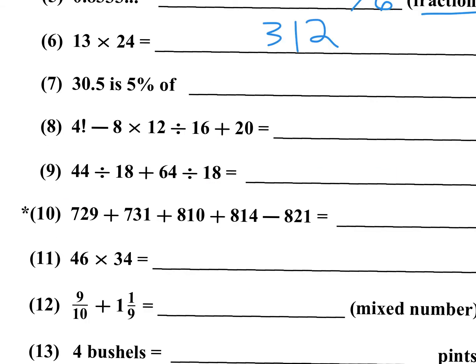Number 7: 30.5 is 5% of what? Five percent is 5 over 100, which is 1 twentieth. So if I divide by 1 twentieth, I multiply by 20. What I really have is 30.5 times 20. I can double the 30.5 and halve the 20 — the double-and-half method: 30.5 times 2 is 61, and half of 20 is 10. 61 times 10 is 610.